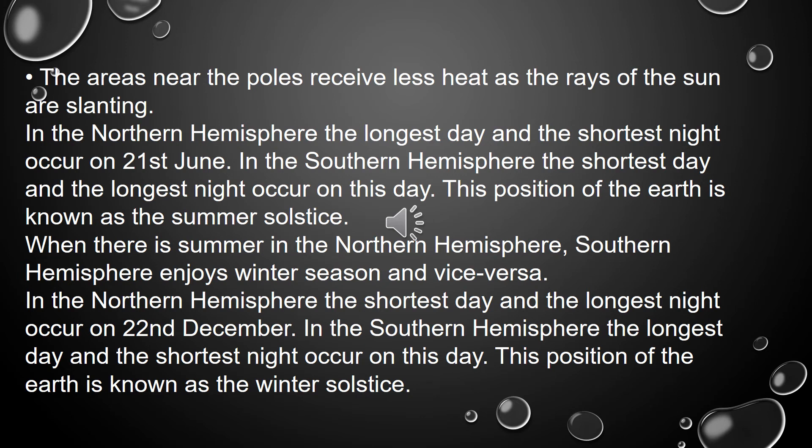In the northern hemisphere, the longest day and the shortest night occur on 21st June. In the southern hemisphere, the shortest day and the longest night occur on this day. This position of the earth is known as the summer solstice. When there is summer in the northern hemisphere, the southern hemisphere enjoys winter season and vice versa.